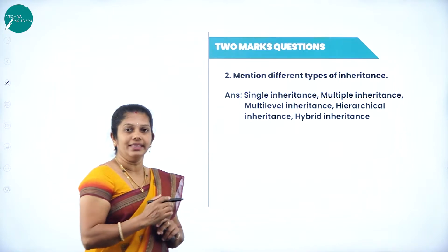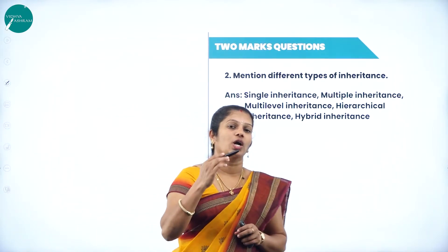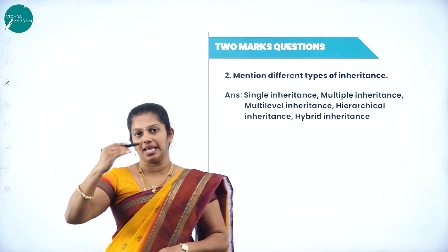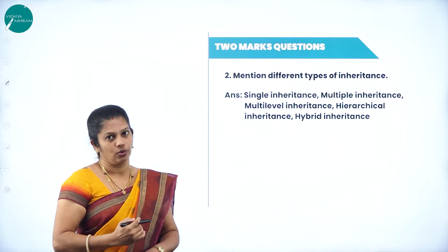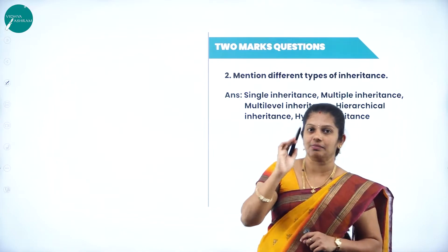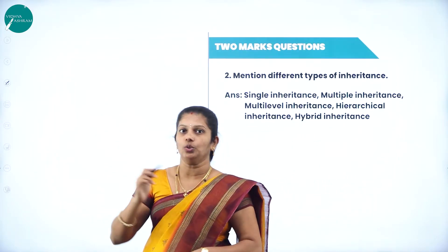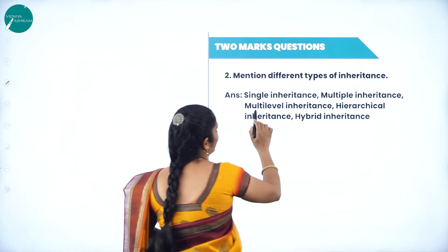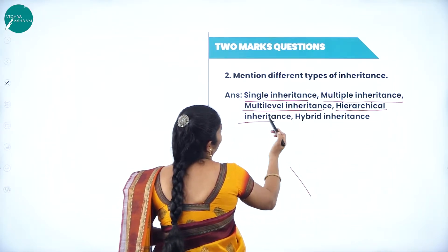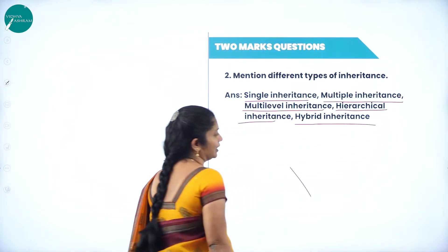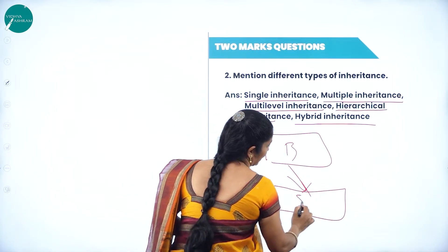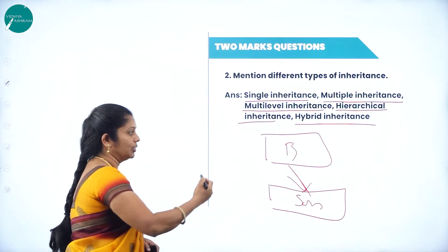The different types of inheritance: inheritance is the process of acquiring the properties from a base class to a derived class — meaning the son acquires the properties of the father. The types are: single-level inheritance, multiple inheritance, multi-level inheritance, hierarchical inheritance, and hybrid inheritance. The properties of the base class are transferred to the derived class.